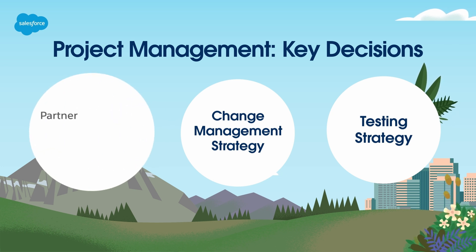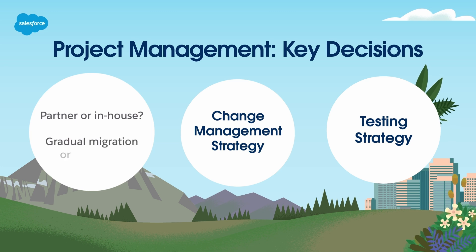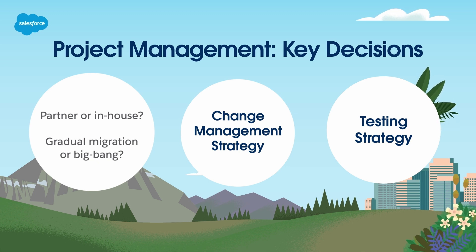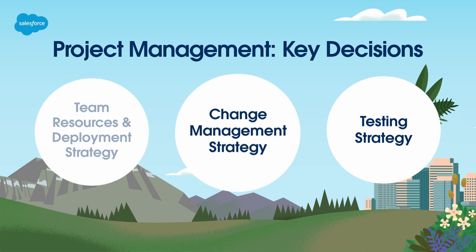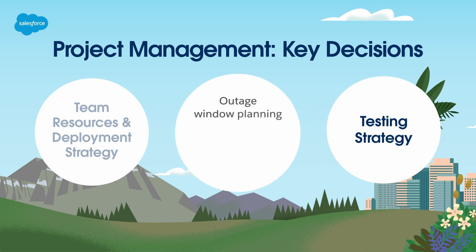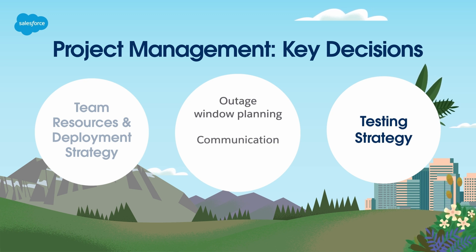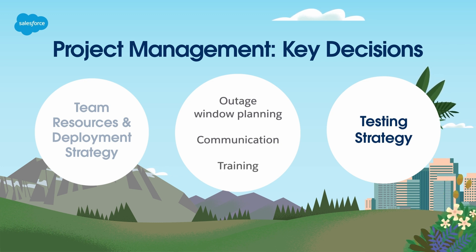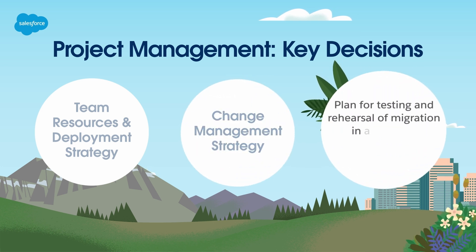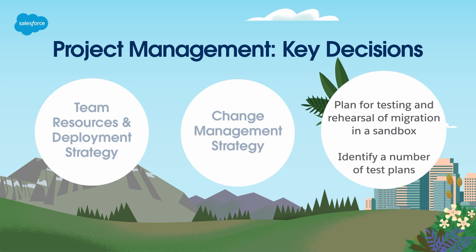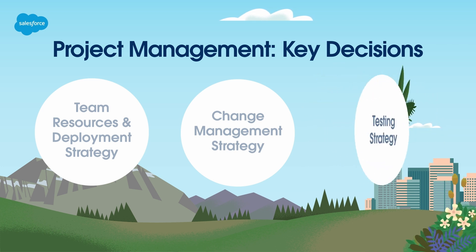These roles can be filled in-house or with partners. You'll also want to decide on a gradual migration or a big bang approach. Salesforce usually recommends a big bang approach in most instances to ensure clean cutover and avoid confusion when importing data. Next, consider your change management strategy by asking the following questions: outage window planning — how will you know how long it will take? Communication — how will you communicate your project plan? Org merges and splits have high visibility with direct impact on users. Training — what will be different for the new org and existing users? For your testing strategy, plan for testing and rehearsal of the migration in a sandbox. You should identify a number of test plans based on real business scenarios. You'll also want to test the metadata and the full data load separately.